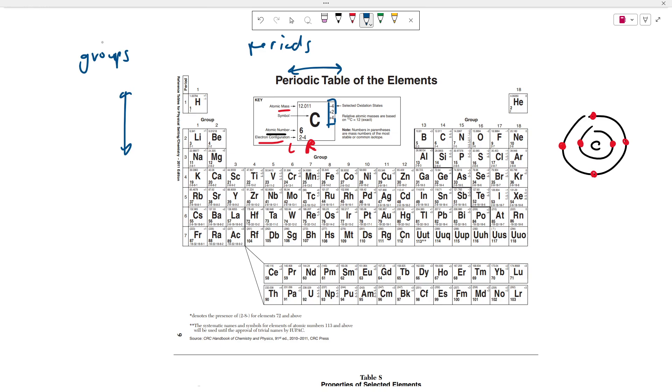And you might notice here that every element in a group has the same number of valence electrons. For example, lithium has one valence electron. Sodium has one, potassium has one, rubidium has one. So it turns out that elements in a group have the same number of valence electrons and thus they must have similar properties.